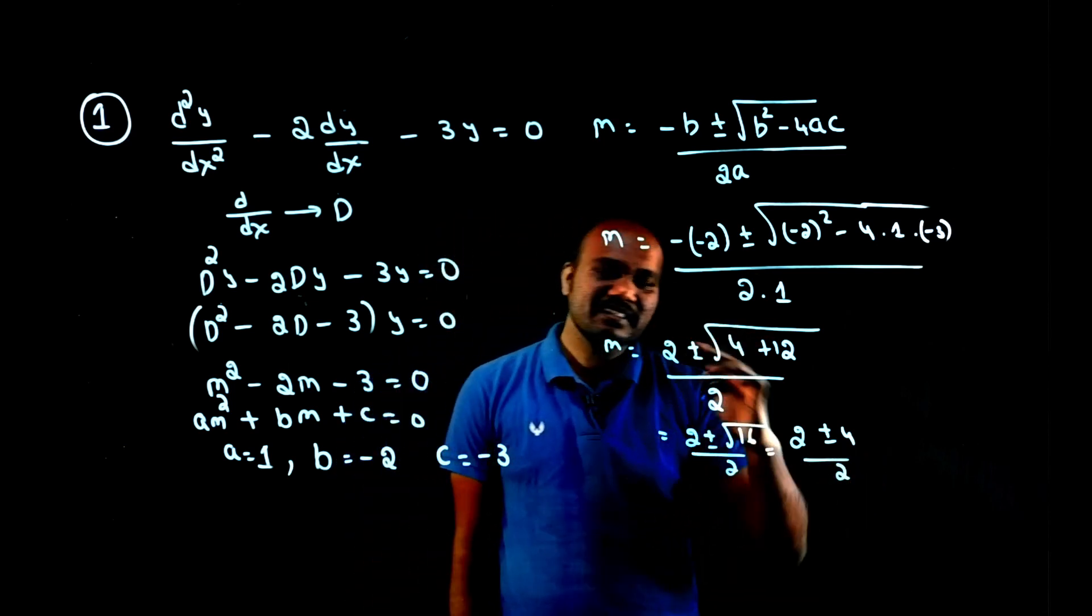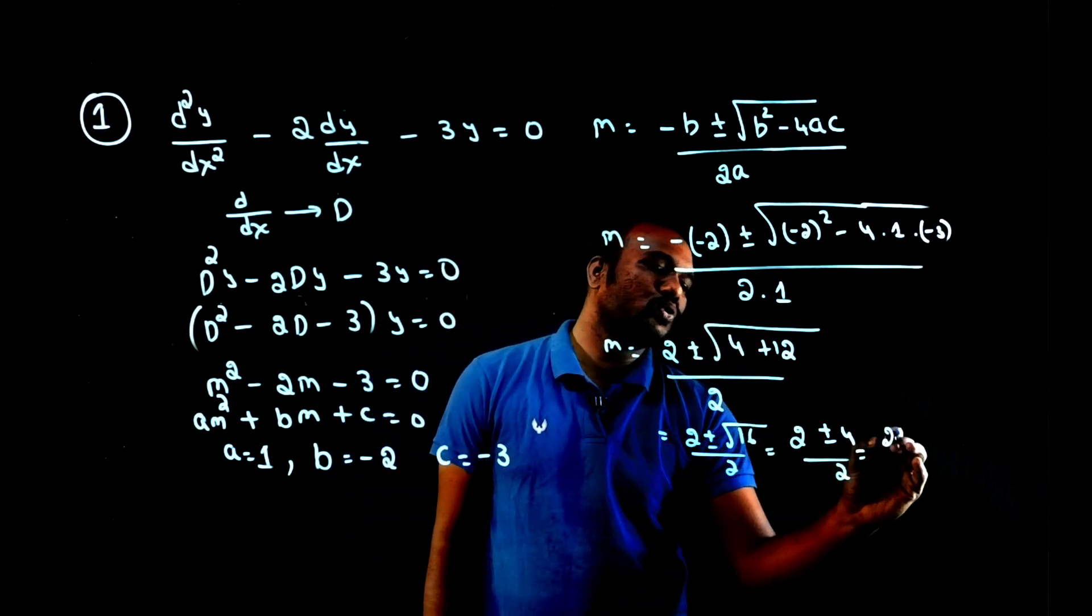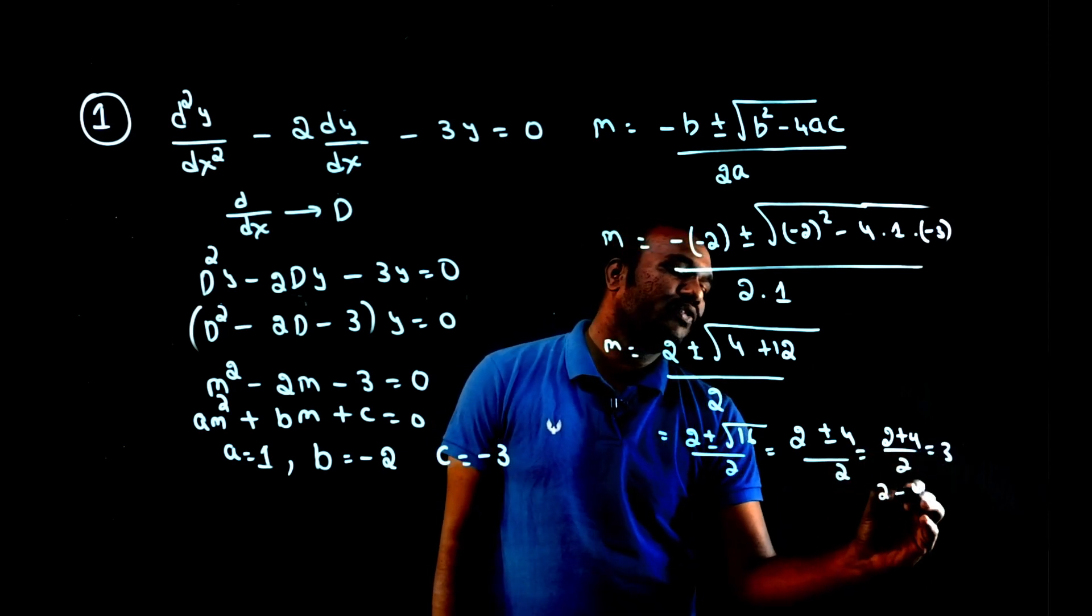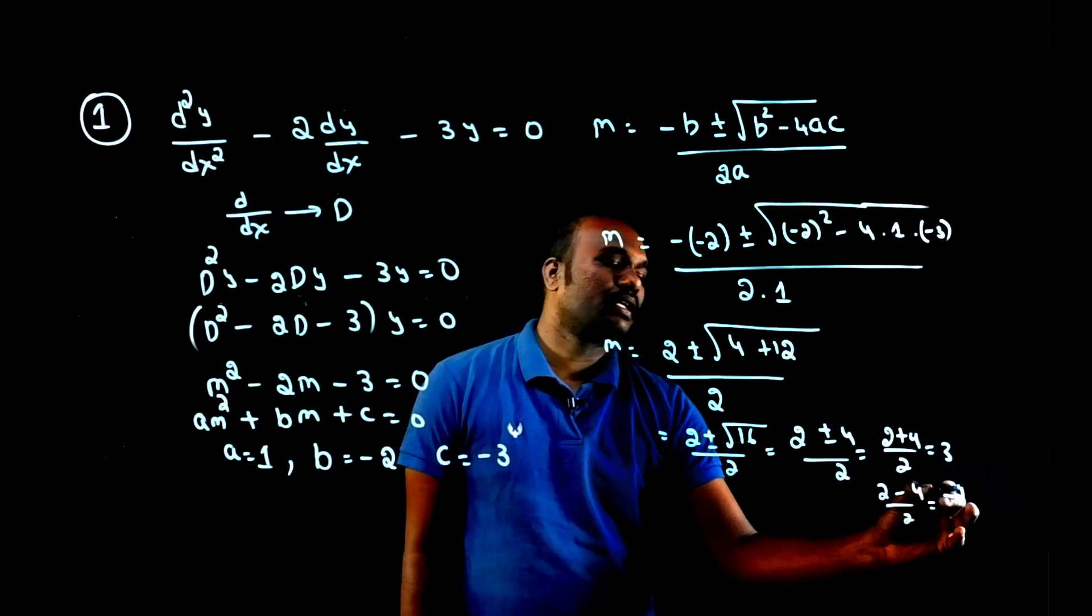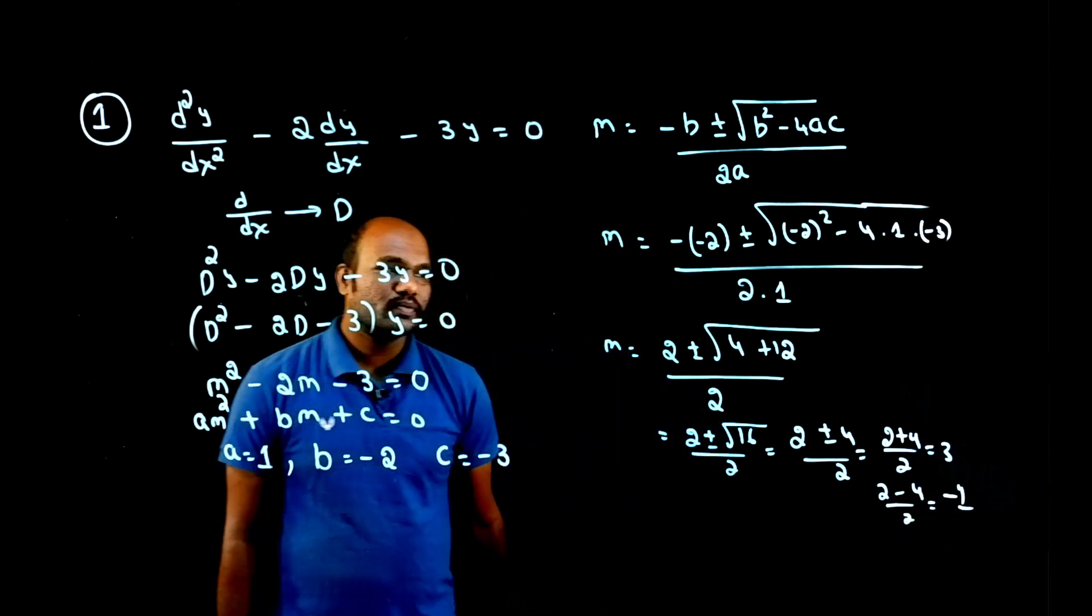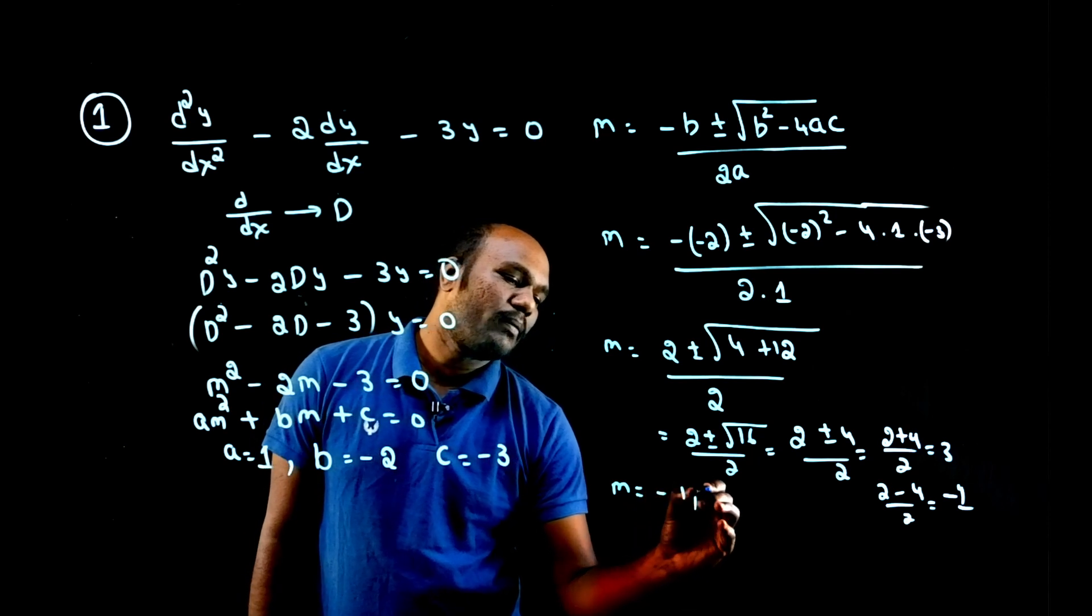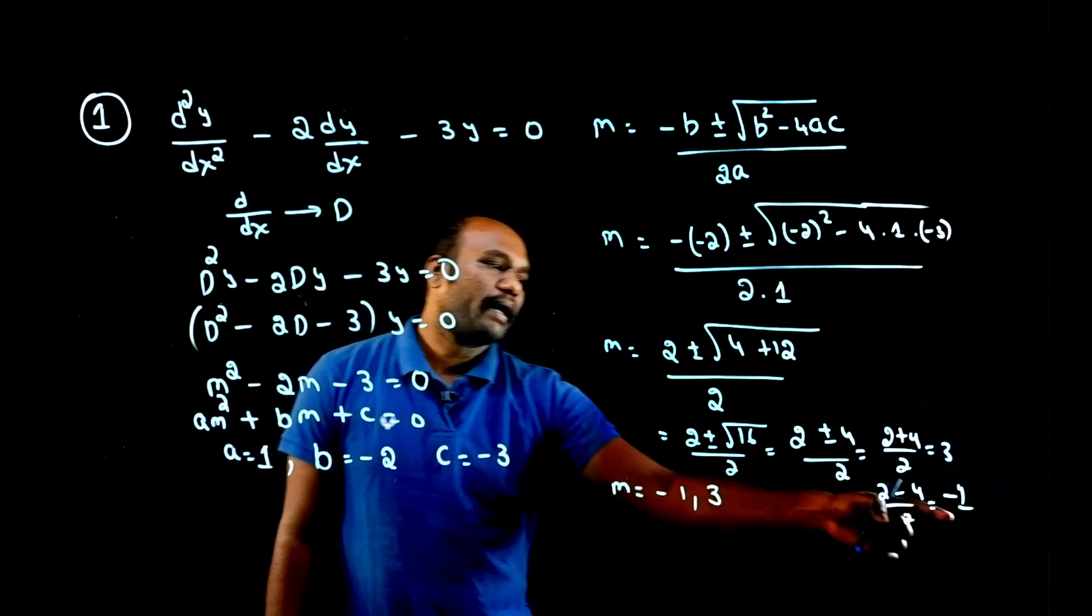So there are two cases, plus case and minus case. Let's take plus case: 2 plus 4 divided by 2, that will become 6 by 2 is 3. So 2 minus 4 divided by 2, that will become minus 1. So the roots are minus 1 and 3. What are the roots? M roots minus 1, 3. There are two roots: minus 1 and 3.